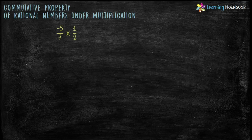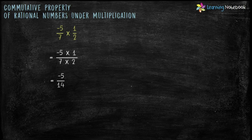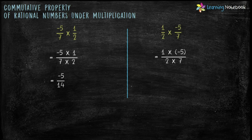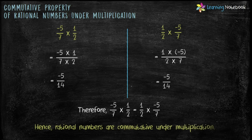Let's do one more example. Multiply minus 5 by 7 with 1 by 2. We get minus 5 into 1 by 7 into 2, which equals to minus 5 by 14. Now, reverse the order of these two rational numbers and multiply them. We get 1 into minus 5 by 2 into 7, which equals to minus 5 by 14. So in both the cases, the product comes out to be the same. Therefore, minus 5 by 7 into 1 by 2 equals to 1 by 2 into minus 5 by 7. Hence, rational numbers are commutative under multiplication.